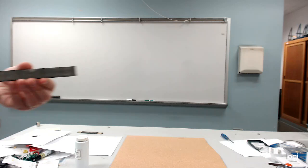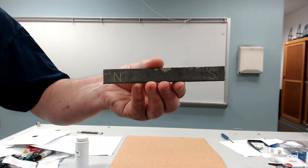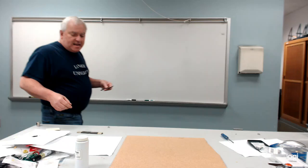When we talk about magnets, magnets have some common properties to them. This is a simple bar magnet and you can see that it's labeled with a north side and a south side. Every magnet has two poles, a north pole and a south pole.